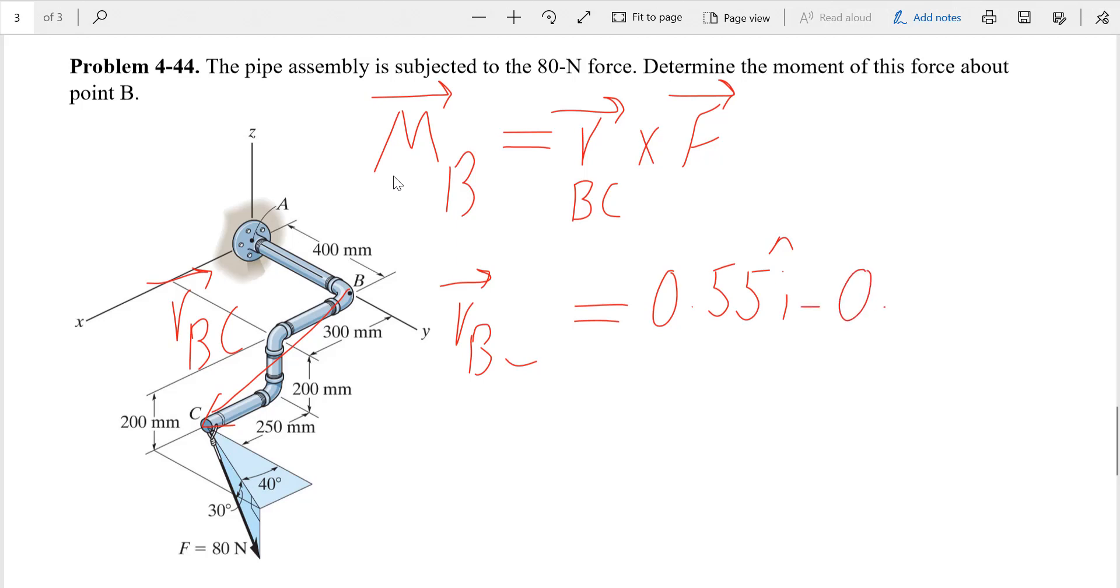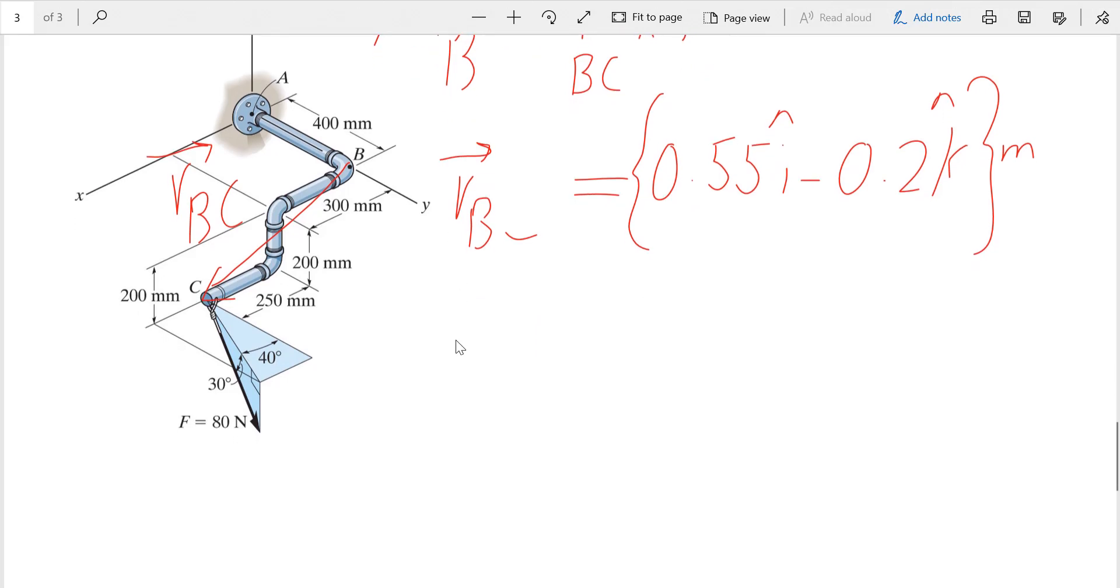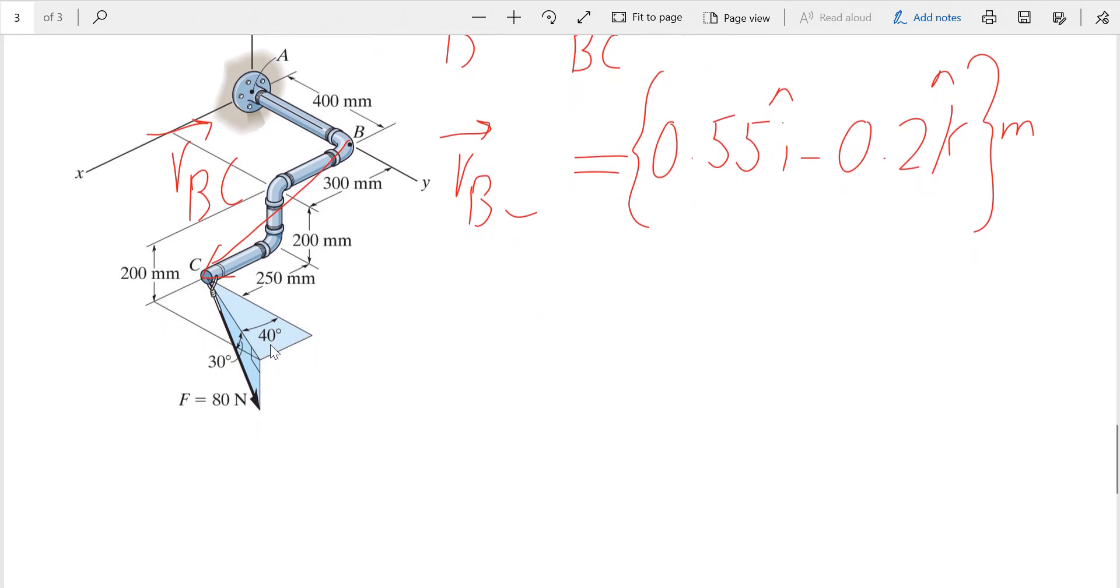Now we need to find the force F. If we look at this image, that 30 degrees is the angle between our force F and the XY plane. So the shadow of this force on the XY plane is 30 degrees. The projection of this force on this line would be 80 cosine 30.